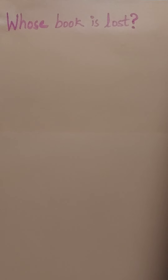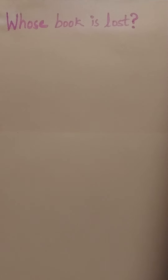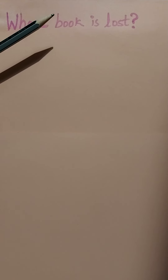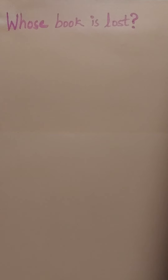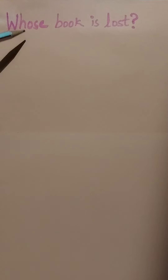Children, just have a look at this sentence: 'Whose book is lost?' Here, the word 'book' is a noun, and describing the word book is the word 'whose'. So 'whose' is an adjective, and it is also posing a question as to whose book is lost — helping in interrogation. So 'whose' is an interrogative adjective.